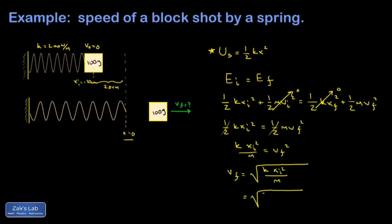Let's plug everything in. That's 200 for k. x initial needs to be in SI units, so that's 0.2 meters squared. Again, I just ignored the minus sign because I knew I was going to square it. The mass needs to be in SI units, that's 0.1 kilograms. Running the numbers, I get 8.94 meters per second.